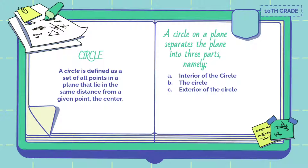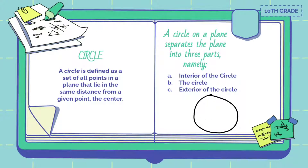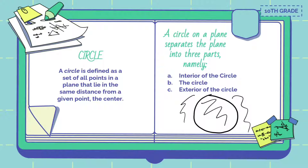A circle on a plane separates the plane into three parts. So the circle itself — for example, if this is a circle — this is the circle B. The interior of the circle is the inside, while the exterior of the circle is the outside. So those are the three parts.